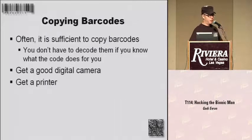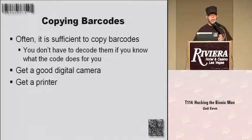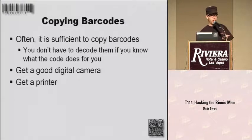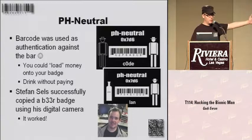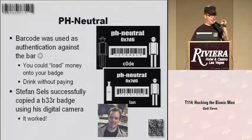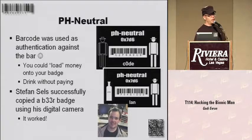The easiest hack with barcodes is in most cases just copying them. If the barcode transports the information you want, get a good camera and a printer, make a picture, print it out, and use that copy. At PH Neutral we have badges, and some of those badges are the alcoholic badges — you can actually get free beer with them. This guy didn't want to pay for beer, so he took a picture of someone's 'get free beer' badge, went to the copy shop, got it printed and laminated, and got free beer. Which is why we now have chip cards.